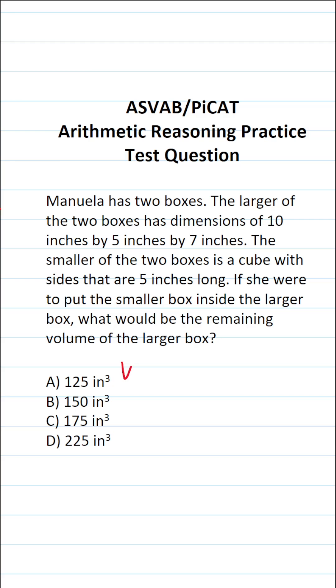All right, so the first thing we have to do is calculate the volume of each of these boxes. The first box is a rectangular prism, so we're going to calculate its volume using the formula length times width times height.